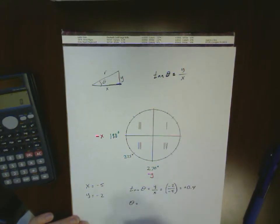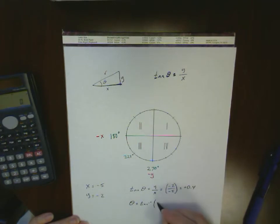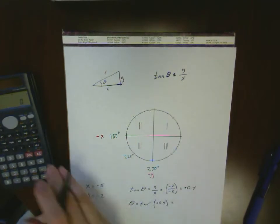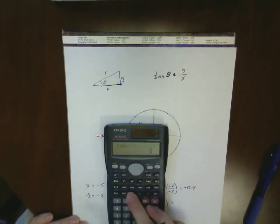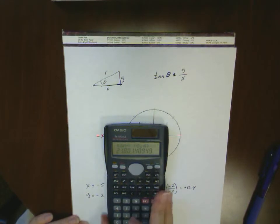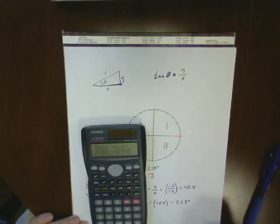If I find the actual angle, the inverse tangent of positive 0.4, and plug that into my calculator, the inverse tangent of 0.4 gives me 21.8 degrees.